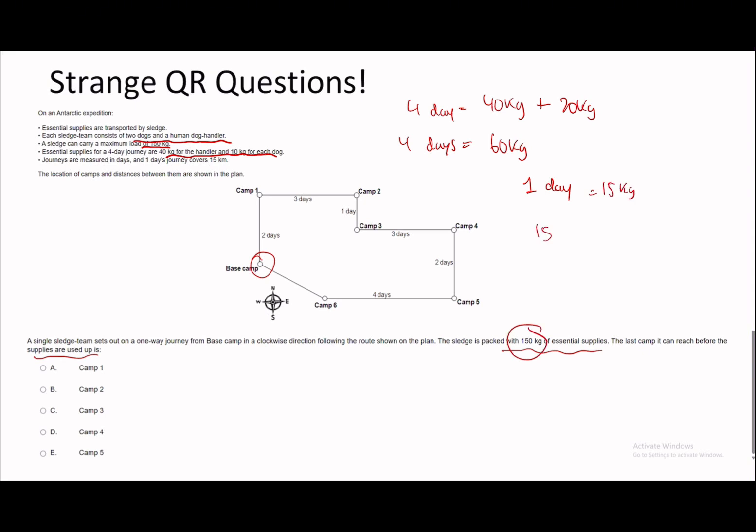So for four days, we need 60 kg. So per day, we need 15 kg. And since we have 150 kg, that means we have 10 days available. So we have 10 days to work with here. So the last camp it can reach before the supplies are used up is: we start with base camp and we have 10 days. So we get to here, we have 8 days left. Get to here, we have 5 days left. Get to here, we have 4 days left. Get to here, we have 1 day left. And we can't make it to camp 5. So the last camp it can reach before the supplies are used up is D, camp 4.